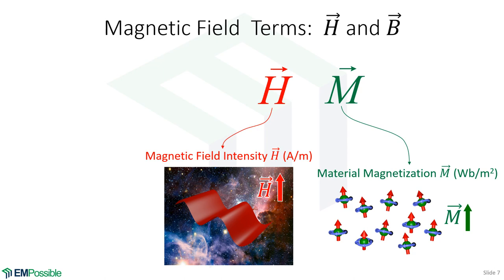At the atomic scale, electron orbits can be limited to a donut pattern, and whenever we have spinning charges we get a magnetic field induced down the center of that rotation. Ordinarily these are oriented randomly. If we apply a magnetic field H, they tend to line up; they want to spring back to their default position — that mass-on-a-spring model again — storing magnetic energy at the atomic scale.